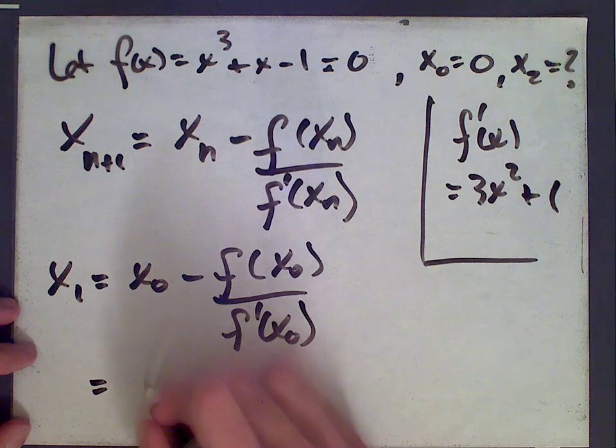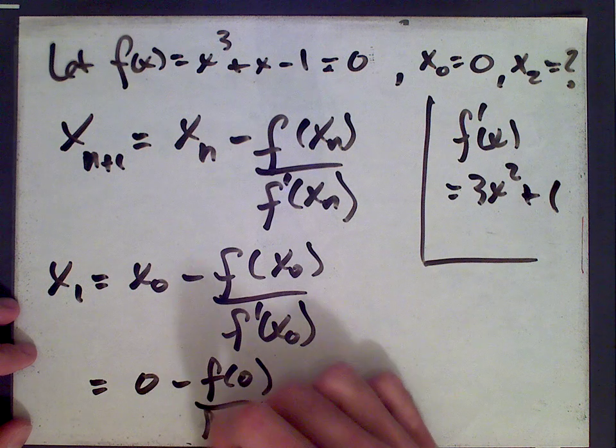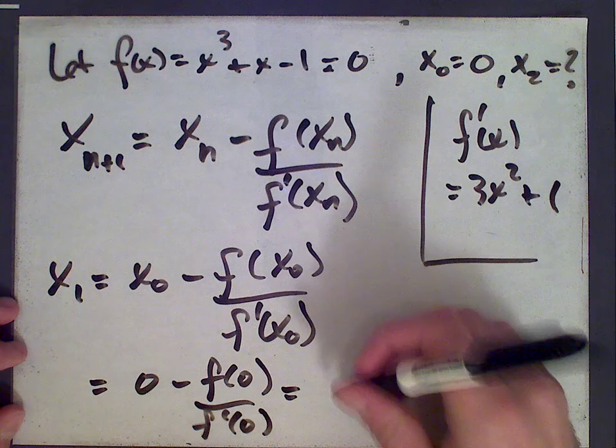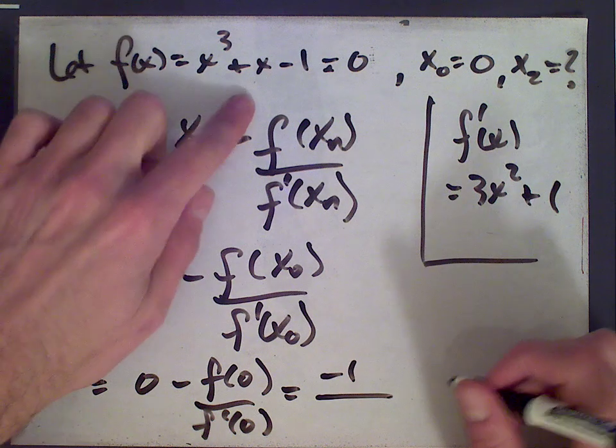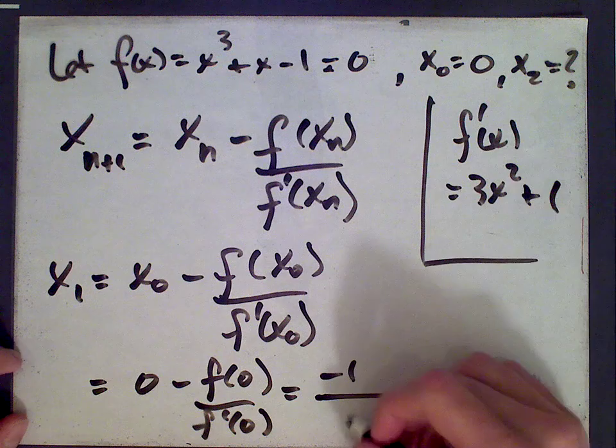Okay, so x zero is zero. So we get zero minus f of zero divided by f prime of zero. f of zero is negative one, as you can see if you plug zero in up here. And f prime of zero is one.